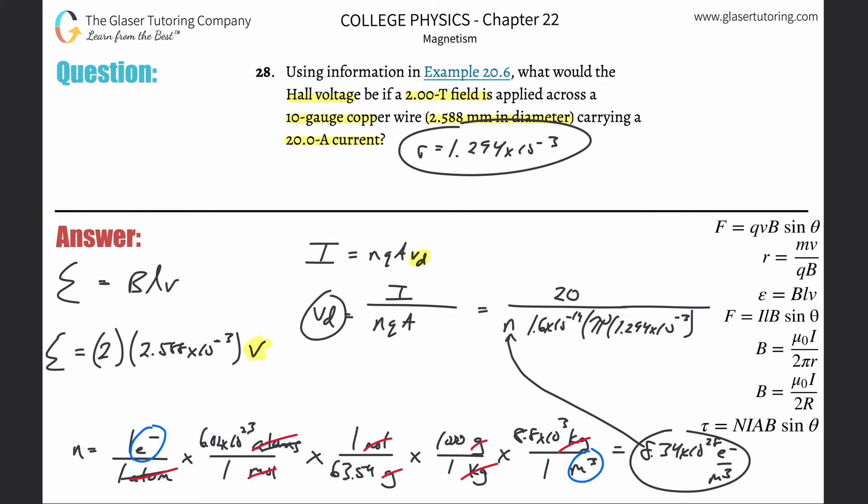That's going to be your v_d, and then once you calculate this, you throw it into this equation. Let's start with 20 divided by 8.34 times 10 to the 28th times 1.6 times 10 to the minus 19th times π times our radius of 1.294 times 10 to the minus 3 squared. I get a value of about 2.85 times 10 to the minus 4th.